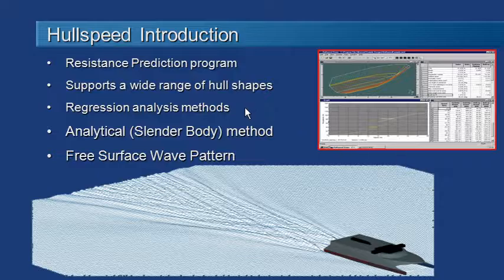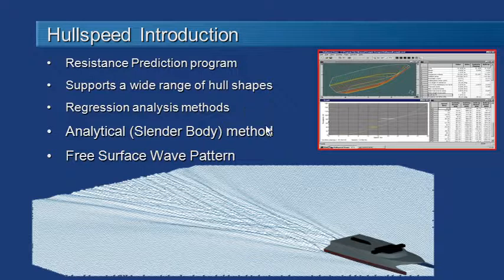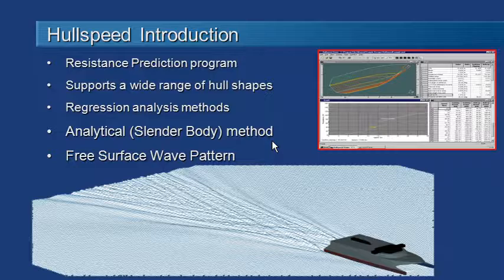The first approach is a series of regression analysis methods. These are resistance prediction methods based on tank testing. We also have an analytical or slender body method, which is a technique based on first principles of potential flow.